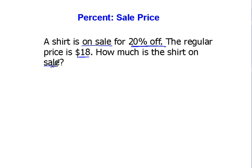So what I'm going to do, there's two different ways to do this. I'm going to figure out what 20% of 18 is. That's my discount. That's the part I'm going to take away from the 18, because if it's on sale, I'm going to pay less than what the regular price is.